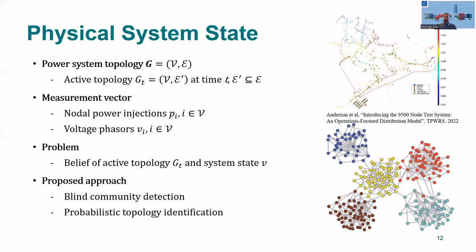To give you an idea of estimating the physical system state, consider, for example, a power distribution system that has a certain physical topology. Let's call this the graph G. Now, at any point in time, the active topology of this power distribution system is a subset, subgraph of this graph. This we call the active topology. What can we observe about this system? We can obtain a measurement vector, which consists of power injections at the nodes and voltage phasors at the nodes. And our objective is to build a belief about the active topology and the system state, that is, the voltage phasors at the nodes. What we propose is to use a combination of blind community detection and probabilistic topology identification for solving this problem.